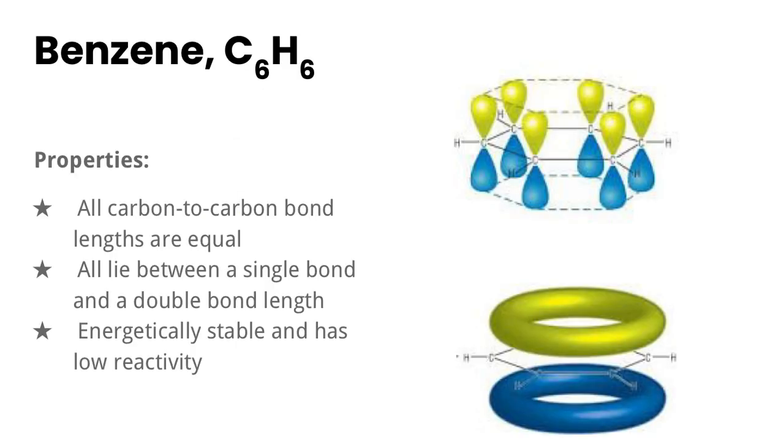So another really interesting structure where this happens is benzene or C6H6. Now in benzene we have a six carbon ring and when we draw it we draw one carbon double bonded and then the next carbon single bonded and then there would be a hydrogen attached to each of those carbons.